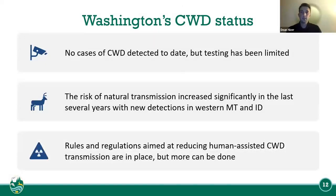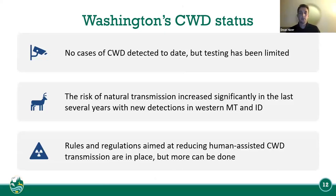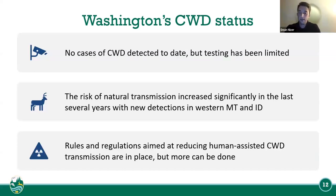Washington CWD status: currently there are no cases detected in the state, but testing is limited due to personnel and funding. The risk of natural transmission has increased significantly in the last several years with new detections close to our state in Montana and Idaho. Rules and regulations are aimed at reducing human-assisted CWD transmission, though definitely more can be done.